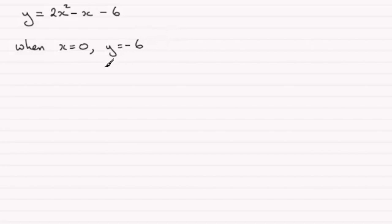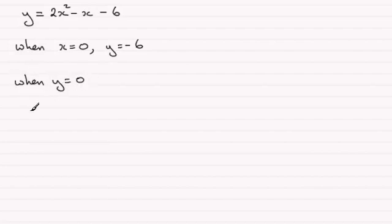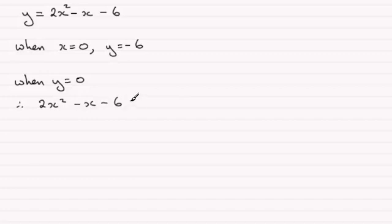When it crosses the x axis we know that y would equal 0. So when y equals 0, we're going to have 2x squared minus x minus 6 equals 0.